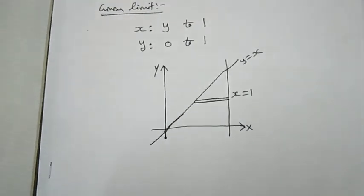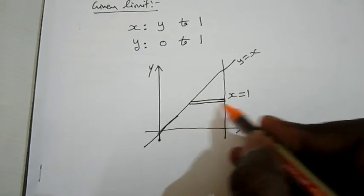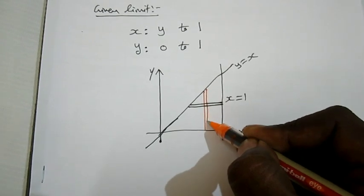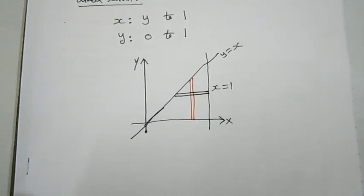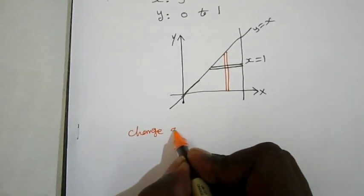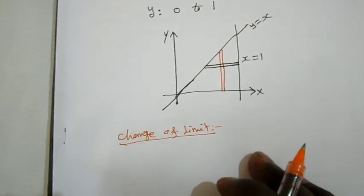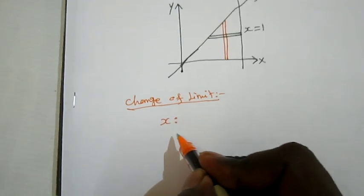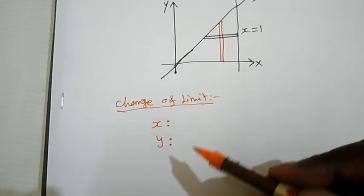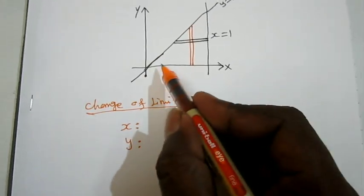Now by the change of order of integration, I want to change this horizontal strip into a vertical strip. For this vertical strip, I am going to write out the new limits — the change of limits. For the vertical strip, the y limit is variable and the x limit is constant. So y limit being variable means it is the inner integral.